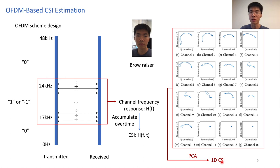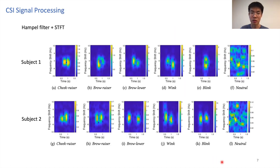Next, we conduct feature engineering to extract features from the CSI signal. We use short time Fourier transform to extract the time frequency domain features. As shown here, different UFAs have different time frequency features, and these features show a certain level of consistency across subjects.